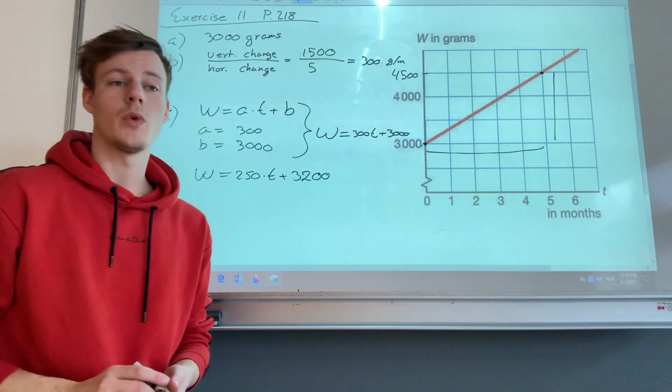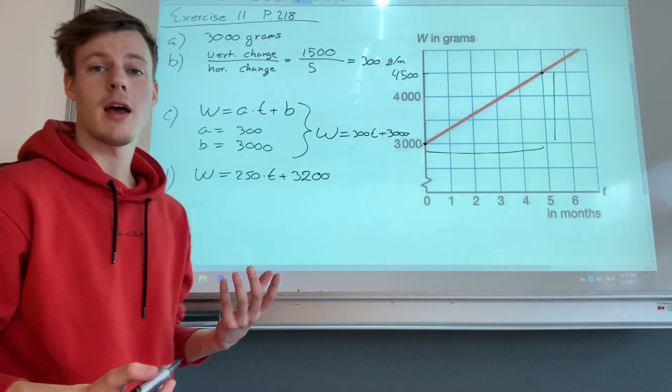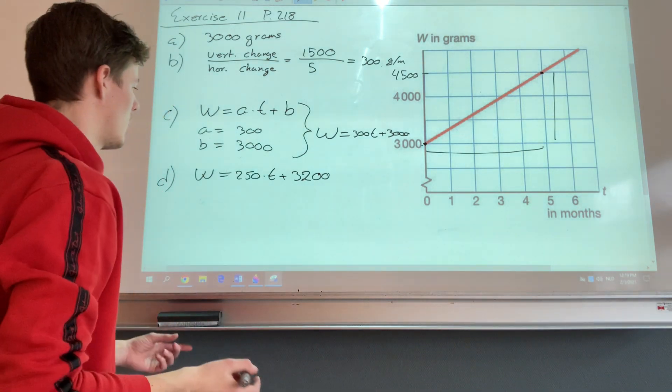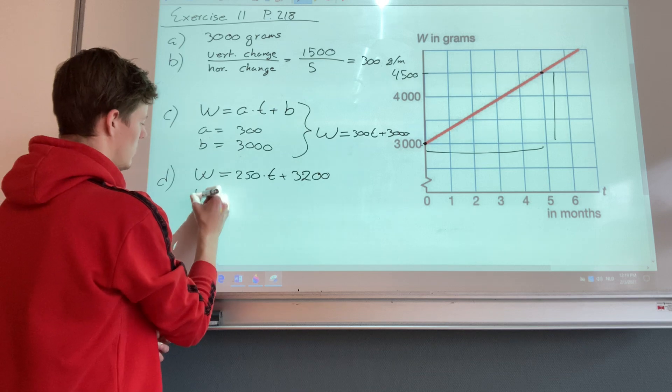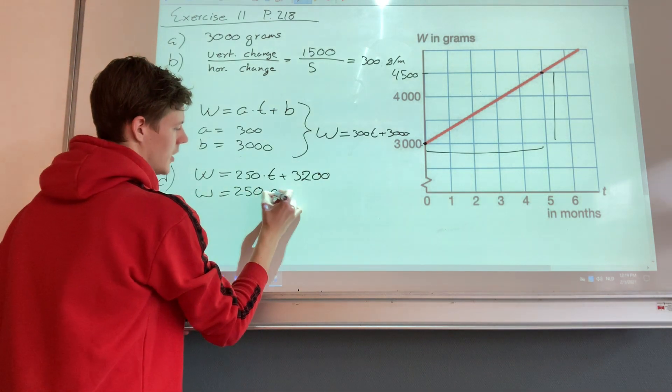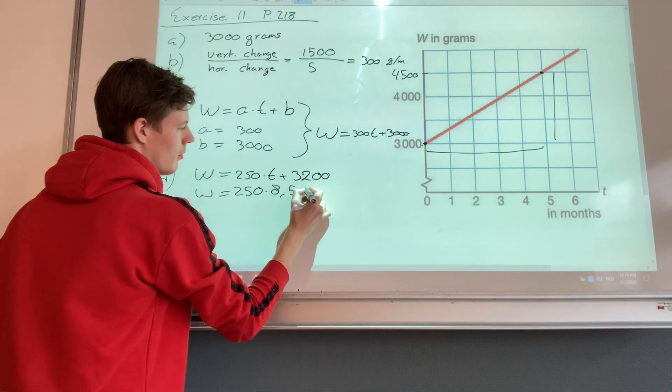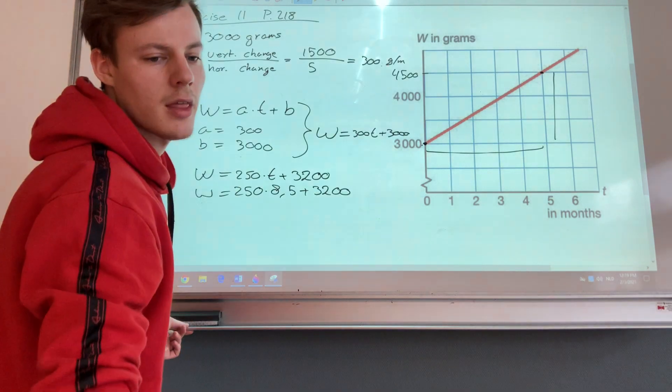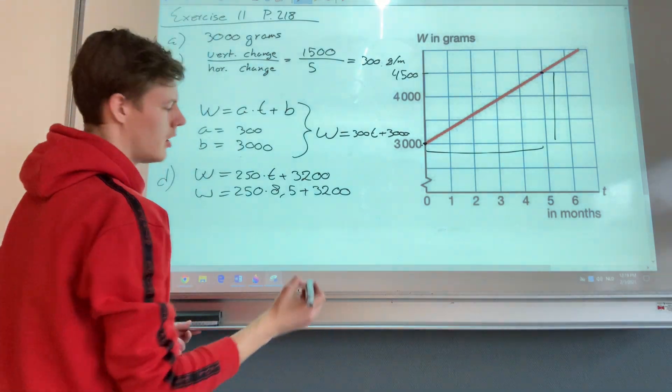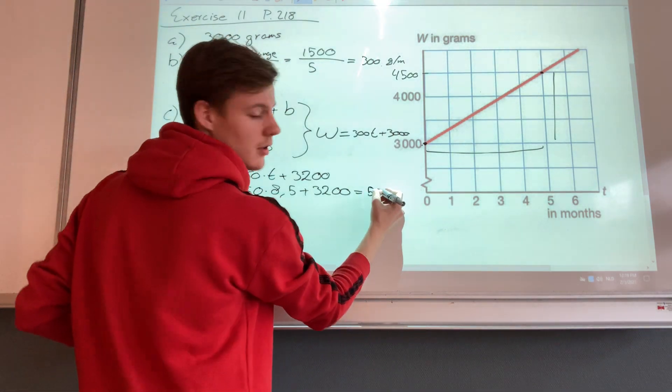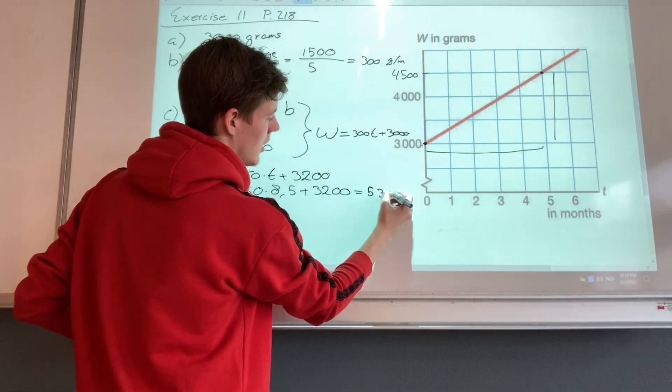Well to know that, we need to fill in eight and a half for t in both formulas. Well let's do that. We have 250 times eight and a half plus 3,200. Let me check that, which gives us 5,325.